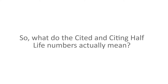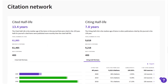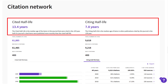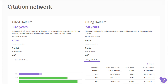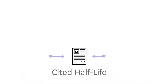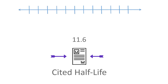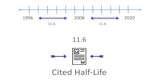So what do the cited and citing half-life numbers actually mean? From a journal's profile page in JCR, view the cited and citing half-life data here, reflected as a number of years. If a journal's cited half-life is 11.6, then half the journal's inbound citations were to items published more than 11.6 years ago, and half were published less than 11.6 years ago.